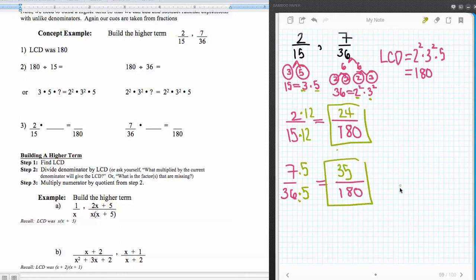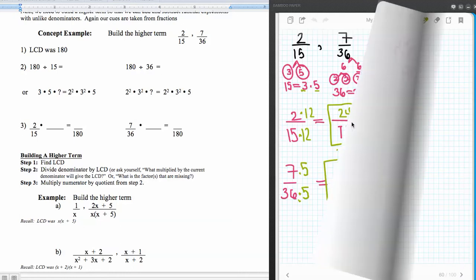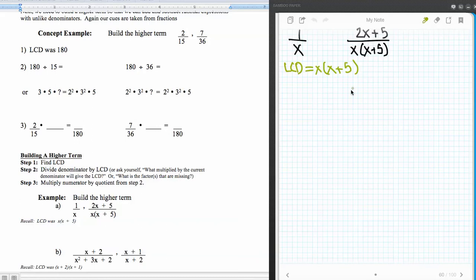Now we're going to do that same thing with rational expressions. So remember our last rational expressions where you found the least common denominator. So one over x and two x plus five over x plus five, those were our least common denominator of x plus five. Well, this one's already a higher term. So there's nothing to do there.